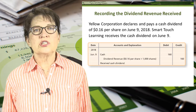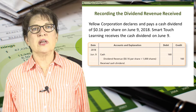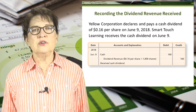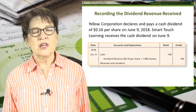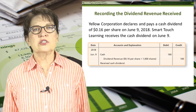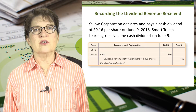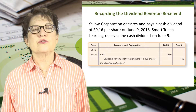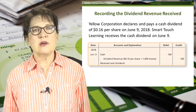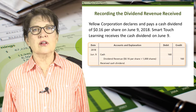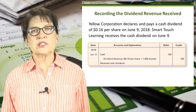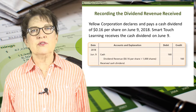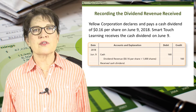Yellow Corporation declares and pays a cash dividend of $0.16 per share on June 9, 2018. Smart Touch Learning receives the cash dividend on June 9. The journal entry to record this would be to debit cash for $160, which is $0.16 times 1,000 shares, and dividend revenue is credited for the same amount.